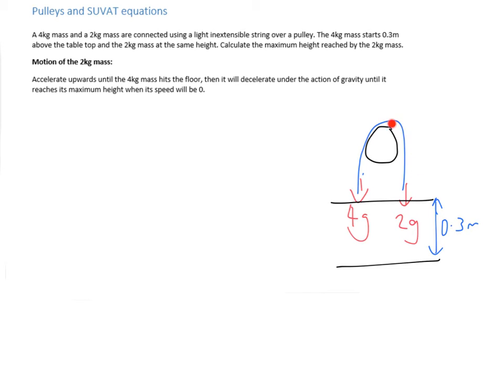We're going to assume it's not going to go over the top of the pulley, otherwise this gets a whole bunch more confusing. What we need to do is work out how fast the 2kg mass is going when the 4kg mass hits the floor. Because if we can do that, then we can use SUVAT equations to calculate the maximum height of the object at that point.